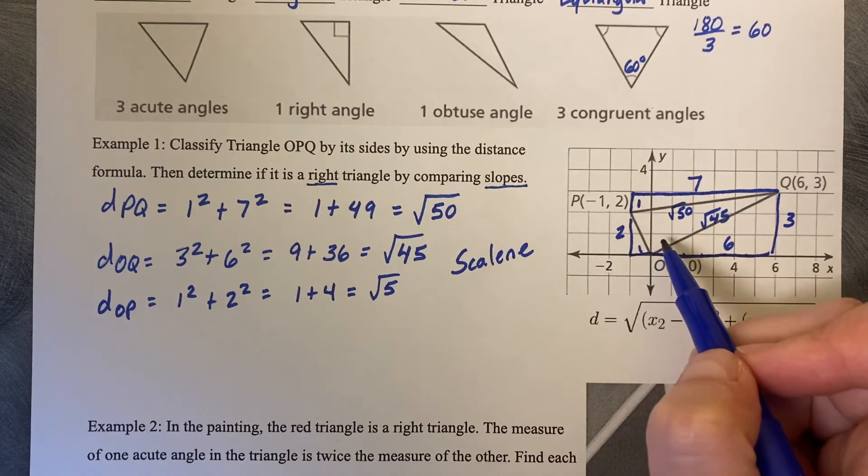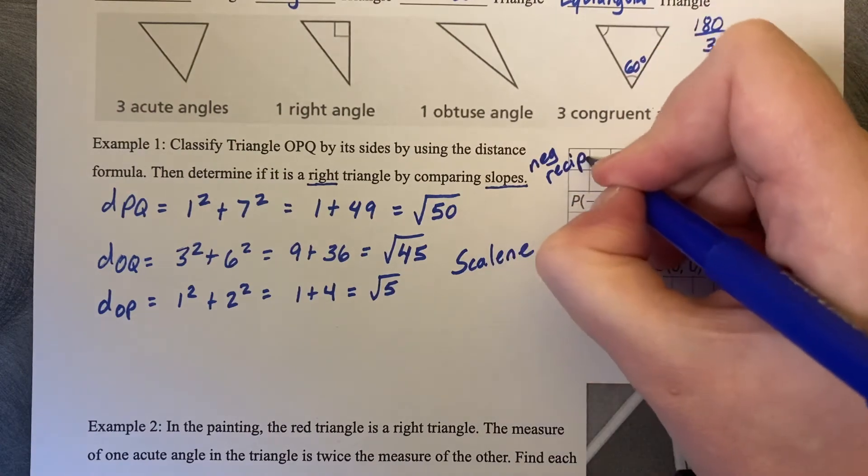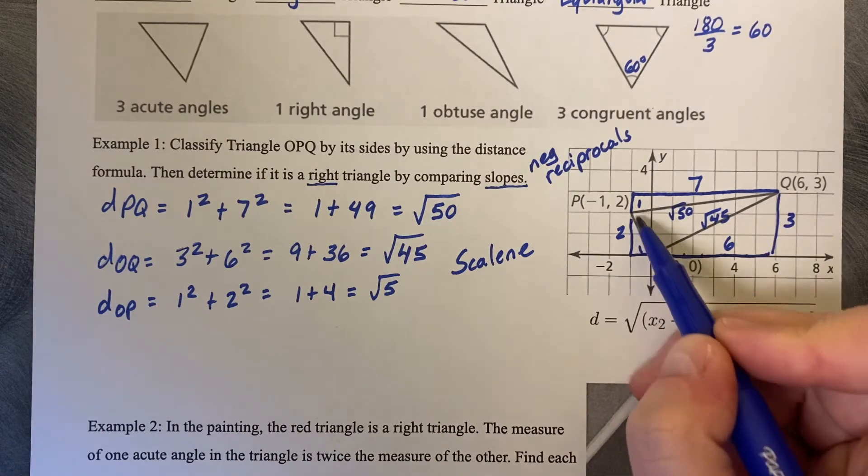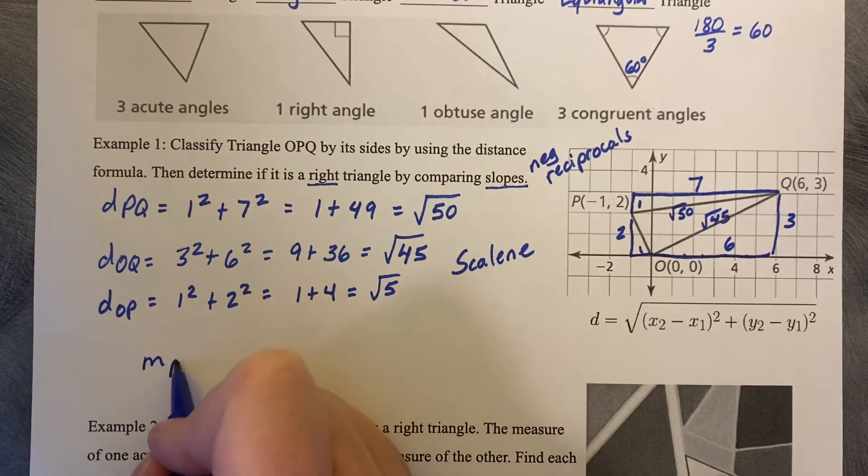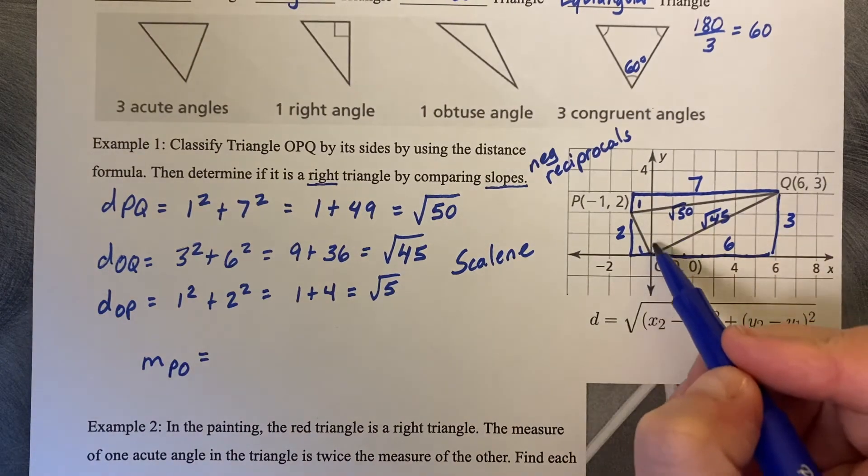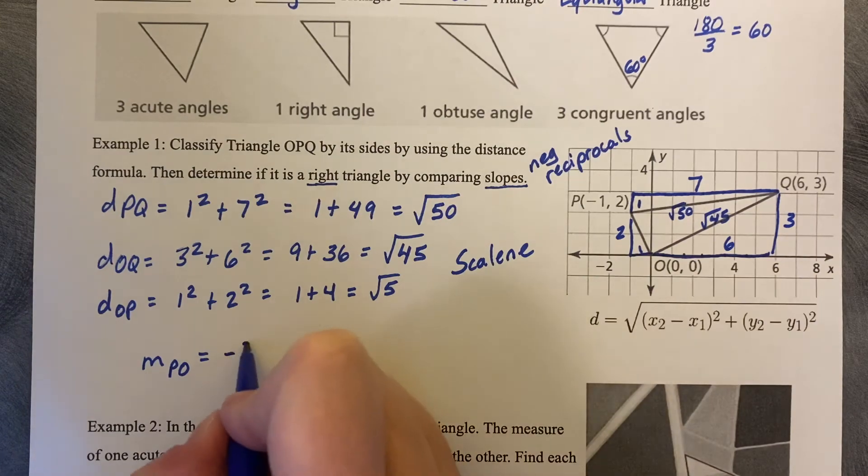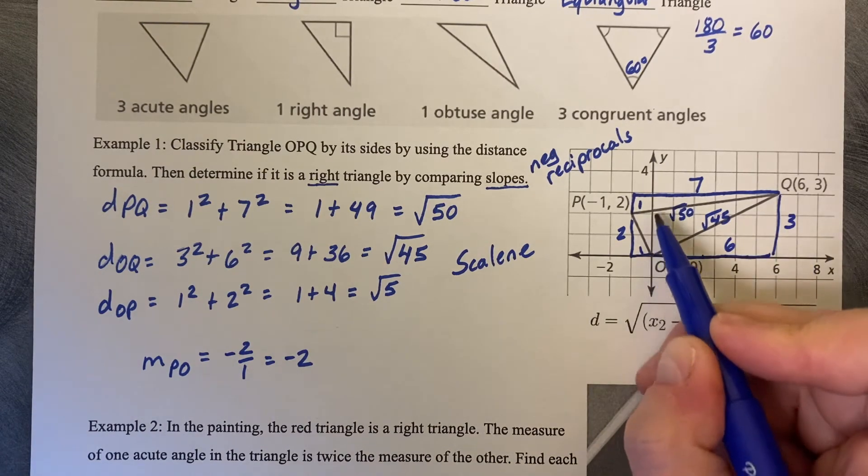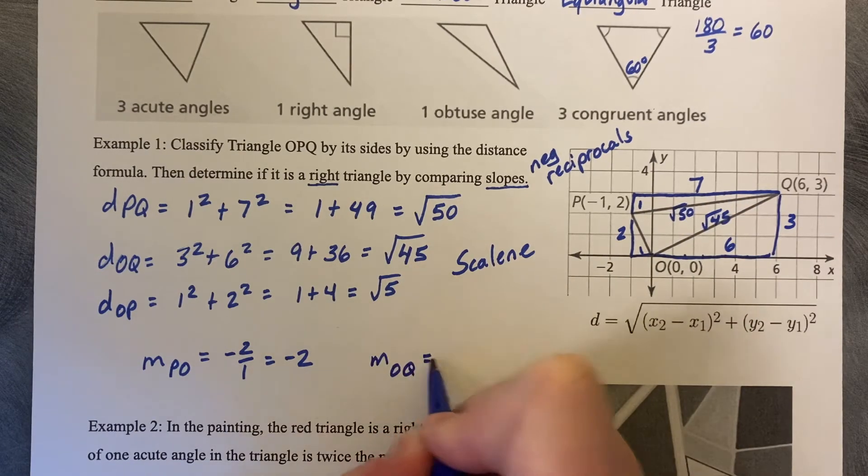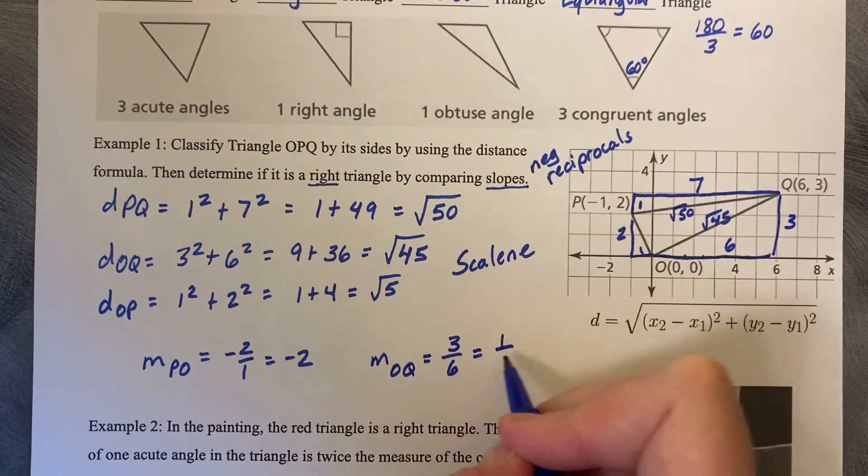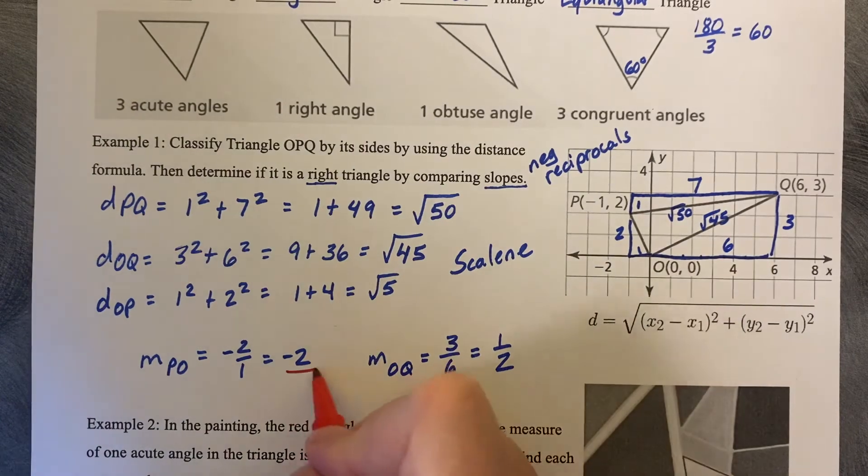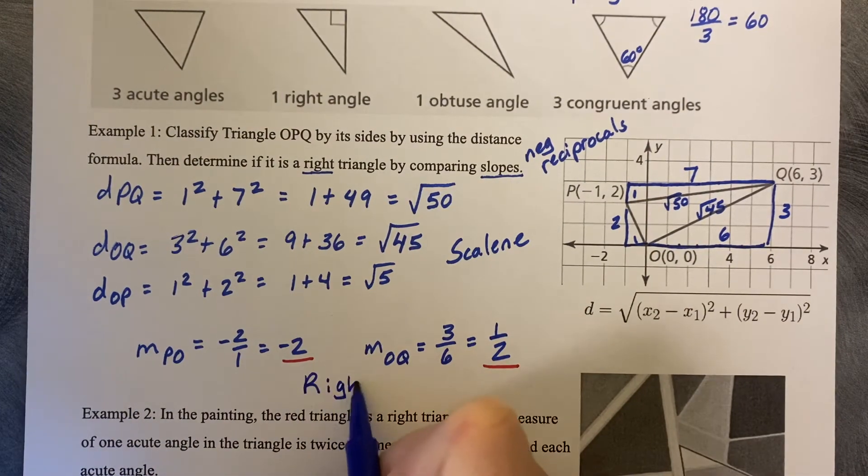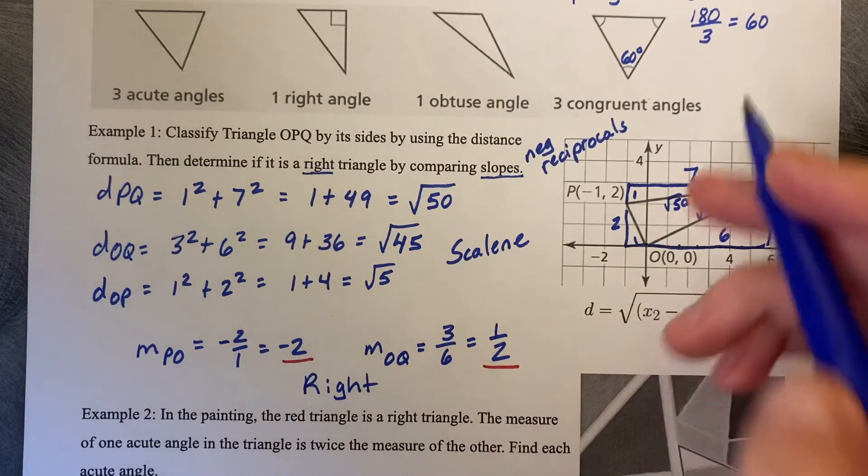So what we're looking for is negative reciprocals, that's perfect opposites. So you're looking for the perfect opposite slopes between these two. So let's talk about the slope of PO first. M standing for slope of PO, rise two and run one to the left, so it's negative two over one or negative two. And we're trying to compare it to the slope of OQ. So the slope of OQ is rise three and run six, which simplifies to one half. So now compare negative two to one half. Are those perfect opposites of each other? Yes, they are.